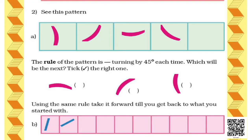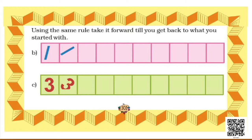Using the same rule, take it forward till you get back to what you started with. How many turns will it take to get back to its original position? Just keep on turning it 45 degrees and you can reach your destination. I have shown you the process of how we come back to the initial position using the 45-degree turn. Now you can do bits B and C by yourself using the rule of turning 45 degrees clockwise.